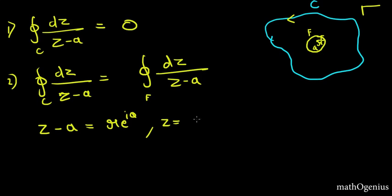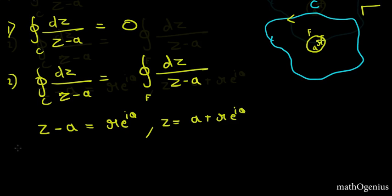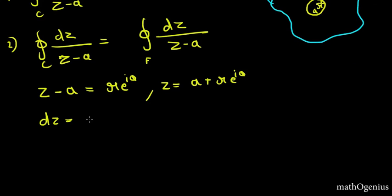Now dz is equal to iota r e raised to iota theta d theta. Now our integration will also change because we change this to polar form from 0 to 2 pi.